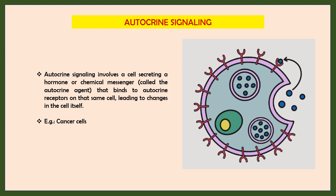The next type is autocrine signaling. Autocrine signaling involves a cell secreting a hormone or chemical messenger that binds to the autocrine receptor on that same cell, leading to changes in the cell itself. Examples include cancer cells, which often produce extracellular signals that stimulate their own survival and proliferation. Another example is interleukin-1 in monocytes — when produced in response to external stimuli, it can bind to receptors on the same cell that produced it. Activated T lymphocytes also respond to antigenic stimulation by synthesizing a growth factor that drives their own proliferation, increasing the number of responsive T lymphocytes.